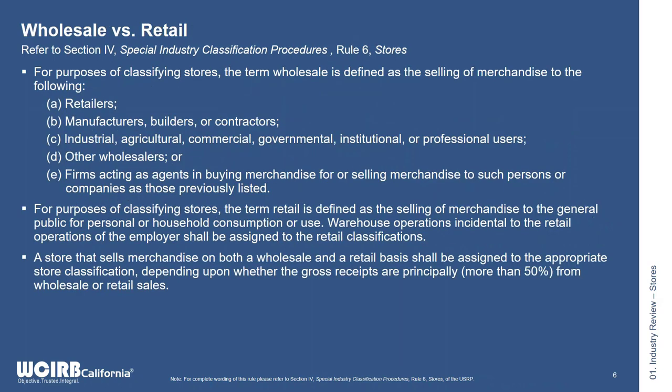The standard special industry classification procedures explain the definitions of wholesale and retail. Wholesale is defined as selling merchandise to retailers, manufacturers, builders, or contractors, industrial, agricultural, commercial, governmental, institutional, or professional users, other wholesalers, or firms acting as agents buying or selling merchandise to such persons or companies.